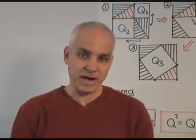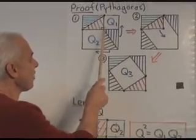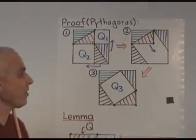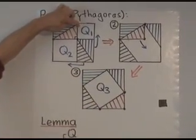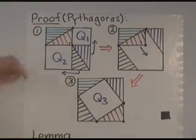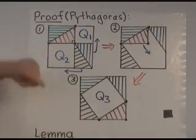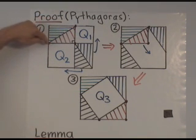Let's start with the proof of Pythagoras' theorem. So right here is the triangle that we start with, the right triangle. And on this side here is the square. And on this side here is the square. In this big square here, I have not only Q1 and Q2, but all together four copies of that original triangle.